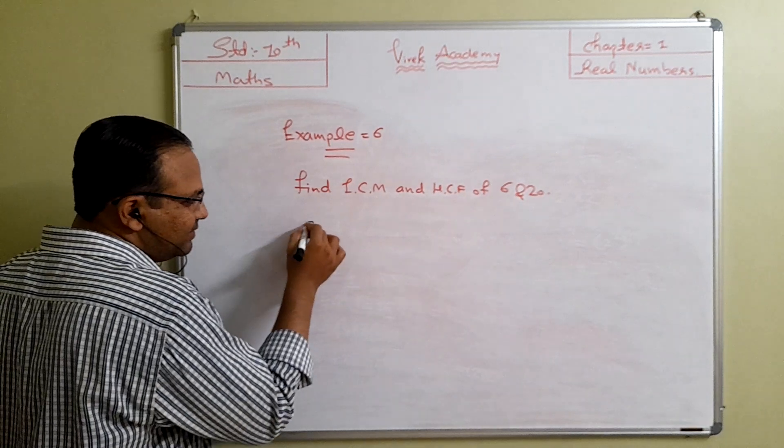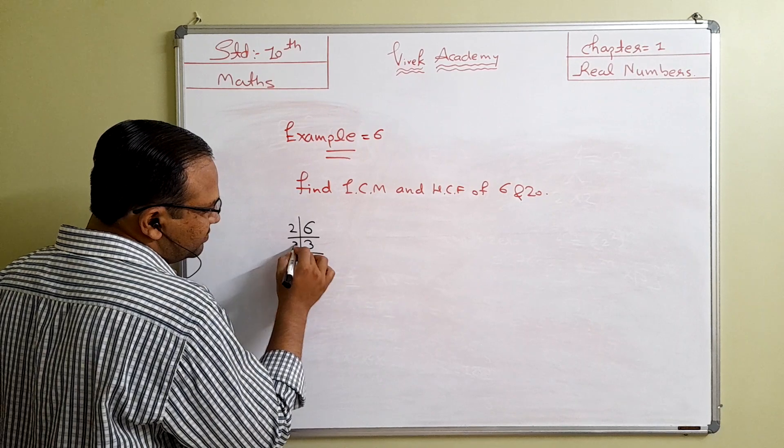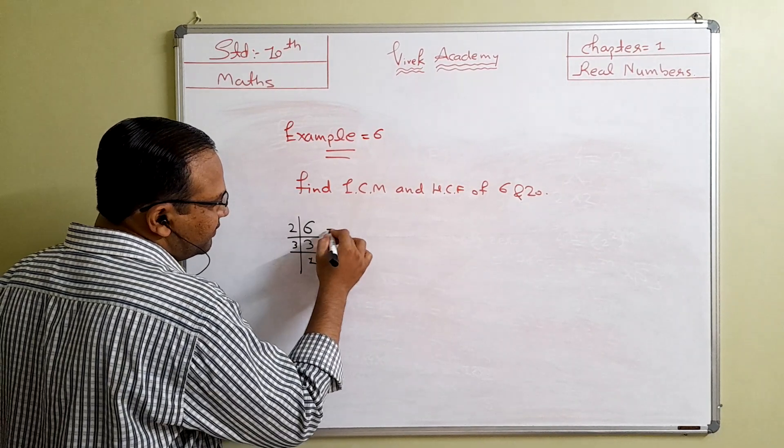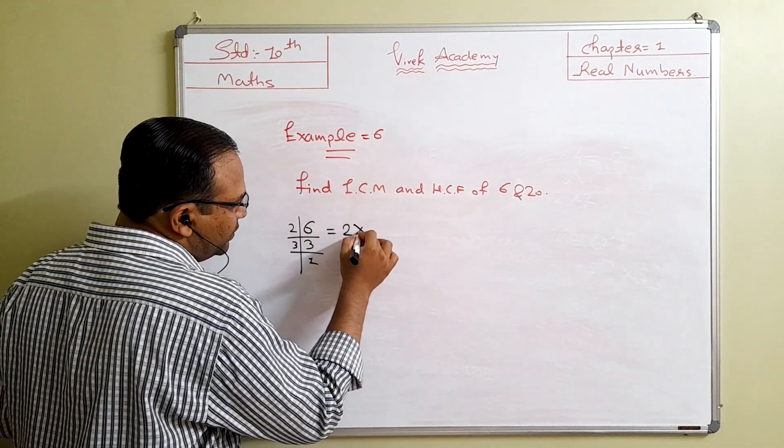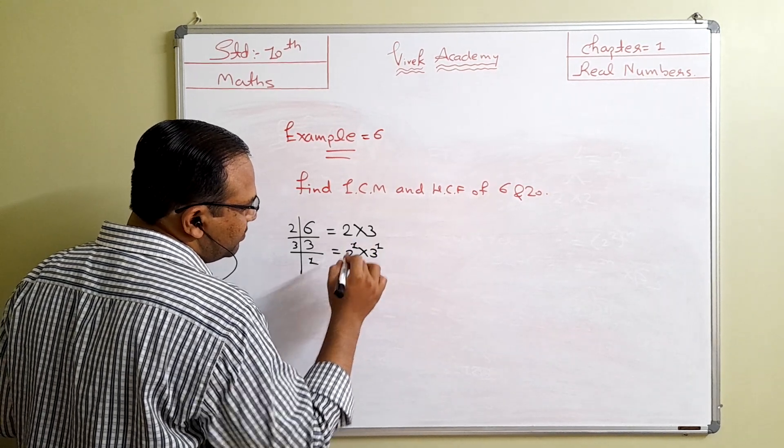Let's check the factors of 6. 2 times 3 is 6, 3 times 1 is 3. So the factors of 6 are 2 times 3, or 2 raised to exponent 1, 3 raised to exponent 1.